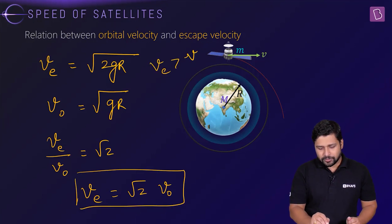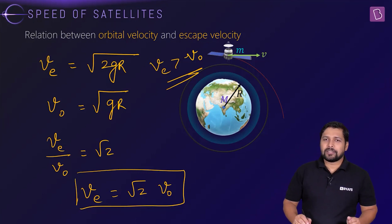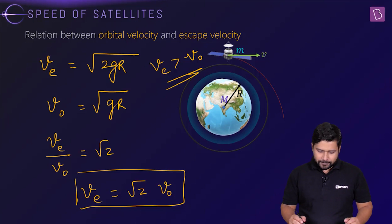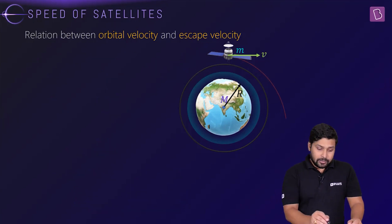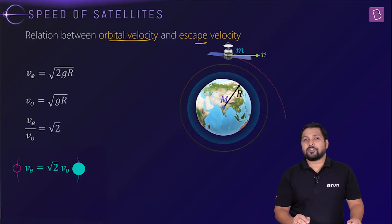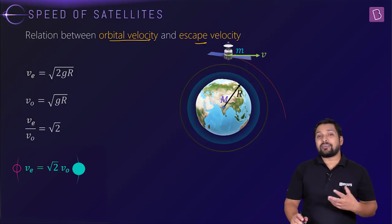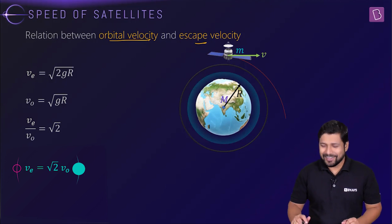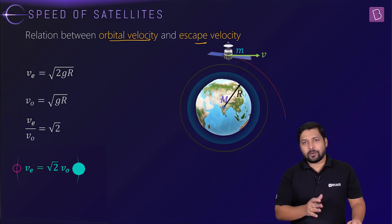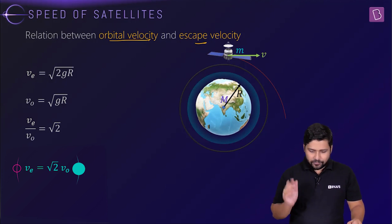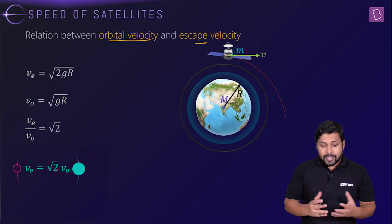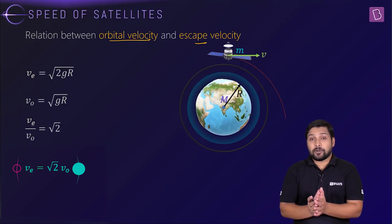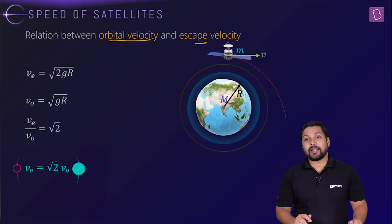Escape velocity is always greater than orbital velocity. This relation is very useful — questions may give you escape velocity and ask for orbital velocity, or vice versa. You should know how to derive one from the other using v_escape = √2 · v_orbital. Next, we calculate the time period of the satellite.